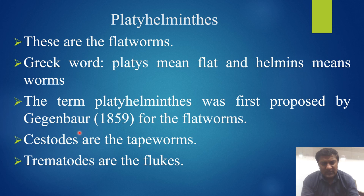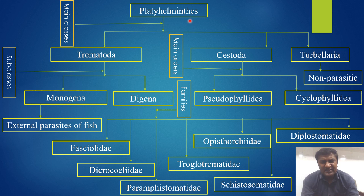Cestodes are the tape worms. Trematodes are the flukes. This is the sketch of the phylum Platyhelminthes classification. The phylum Platyhelminthes is divided into three main classes: the first is Trematoda, the second is Cestoda, and the third is Turbellaria. Turbellaria are non-parasitic animals, while Trematoda and Cestoda are the parasitic animals.